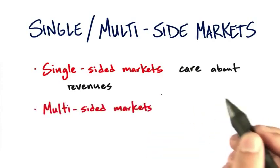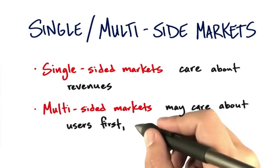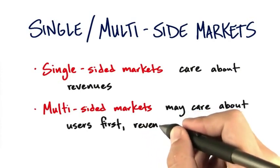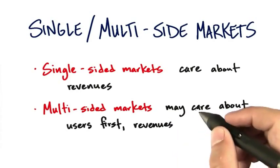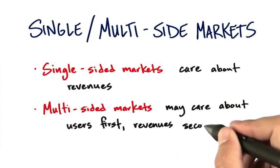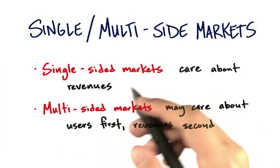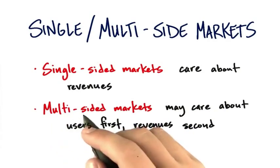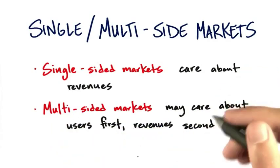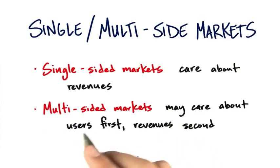In multi-sided markets, there might be users, but there are also very separate people who are payers. The example we keep using is Google, because everybody around the world has probably at one time or another been a Google user. When you use the Google search bar, you're one side of a multi-sided market — you're the user, but you're not the payer. You're paying implicitly, because there is another side: the people using Google AdWords to look for keywords.